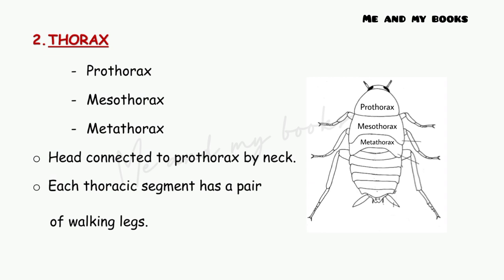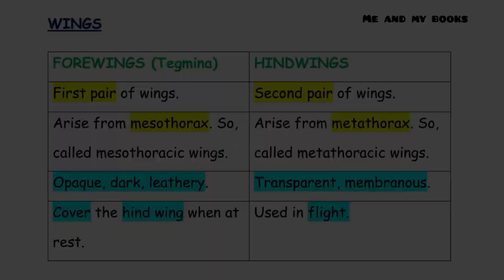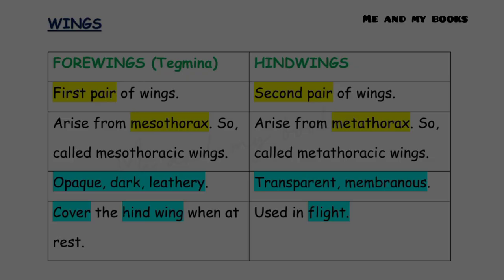The head is connected to the prothorax by the neck. Each thoracic segment has a pair of walking legs. Since there are three thoracic segments, cockroaches have three pairs of legs — prothoracic leg, mesothoracic leg, and metathoracic leg.